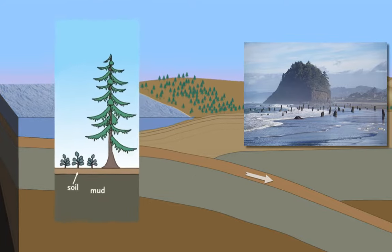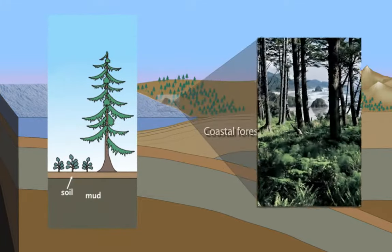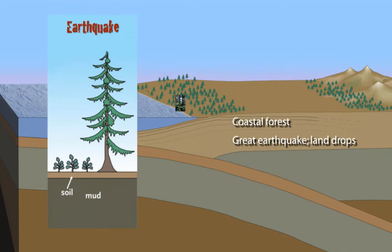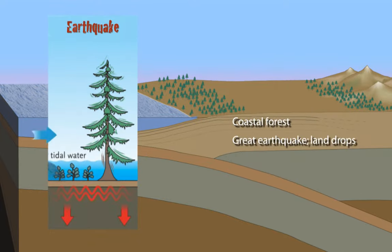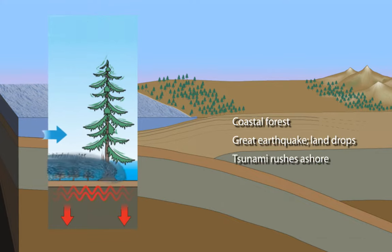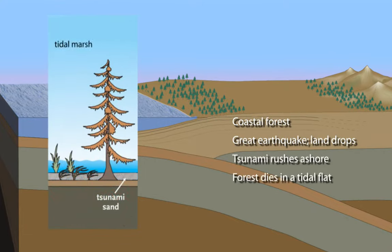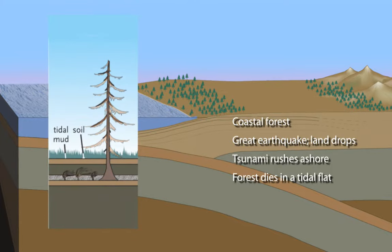Let's look at a close-up view for more detail. The forest, represented by this single tree, grows in fertile soil upslope of the shoreline. During the great earthquake, land drops below sea level, and sand washed in by the tsunami covers the forest soil. Trees die from exposure to saltwater, and intertidal mud accumulates to bury the salty marsh. Over decades and centuries, the land gradually rises again.